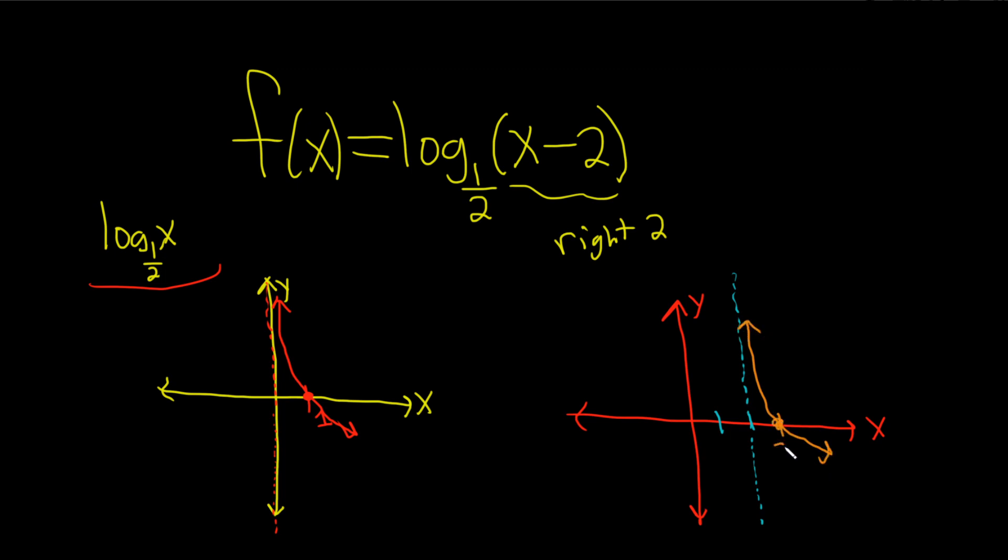This would be 3, because we were at 1 before, and so we went over 2, put this at 3. We're at 0 before, you go over 2, it puts you at 2 for the asymptote. And that would be the graph of this function.